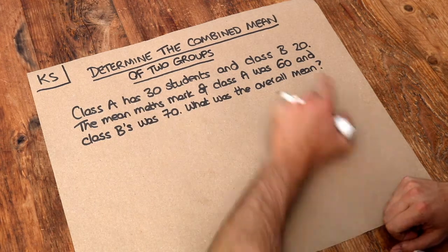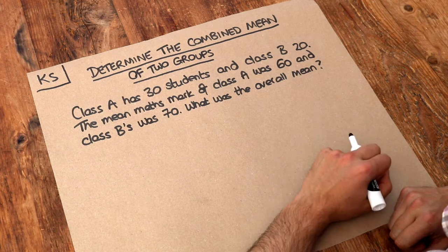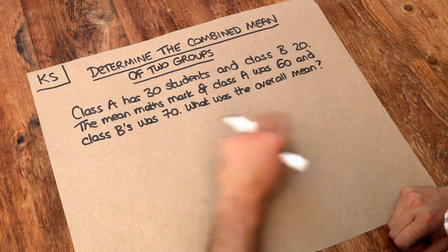So we've got class A has 30 students, class B has 20 students, and we've got the mean maths mark in exam for class A which was 60 marks and for class B it was 70 marks.